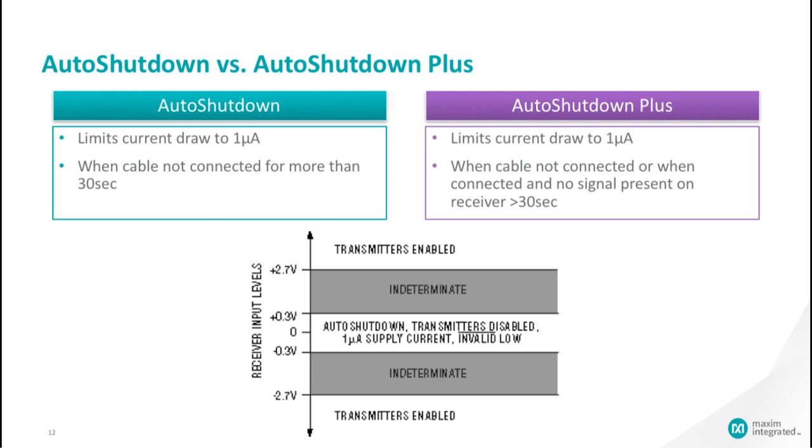Auto shutdown plus also looks at the signal present on the receiver. If no signal, then it will go into shutdown mode. Whenever any receiver input is greater than plus or minus 2.7 volts or the cable is reconnected, it will come out of shutdown mode.